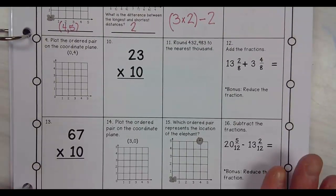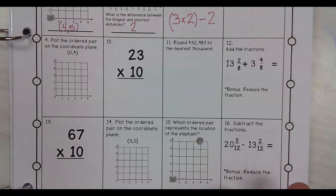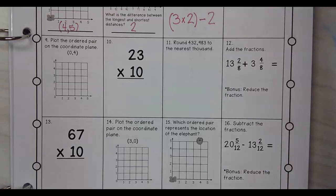Plot the ordered pair on the coordinate plane. 0, 4. Oh, this one's tricky. I am not going to fib. I think it goes...